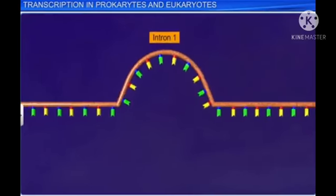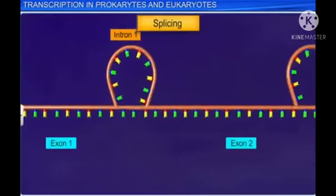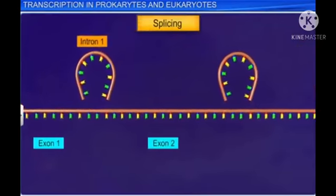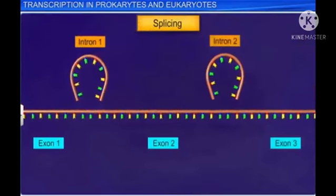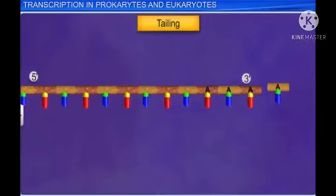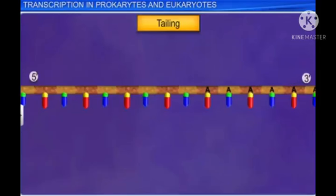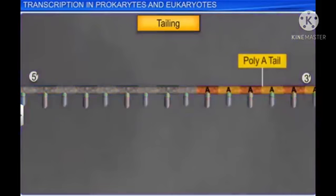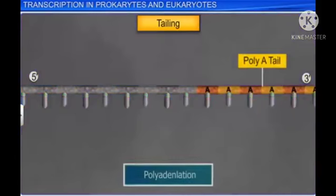The next process is splicing, in which the introns are eliminated and exons are joined in a specific order. Finally, in the tailing process, about 200 to 300 adenylate residues are added to the 3' end of the HnRNA in a template-independent manner, giving rise to a poly-A tail. This process is also known as polyadenylation.